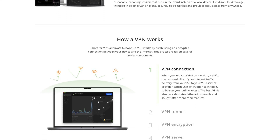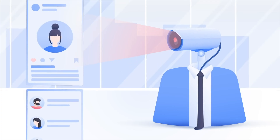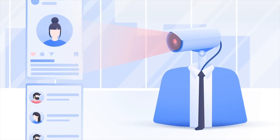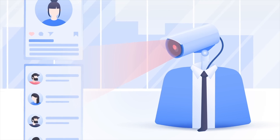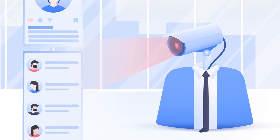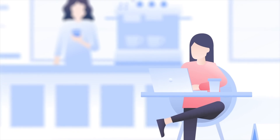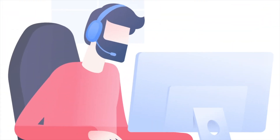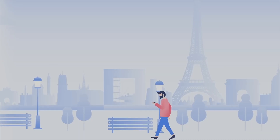IPVanish protects your online activity by hiding your internet traffic from prying eyes. It routes your connection through a secure server, which scrambles your data so that hackers, your internet provider, or even websites cannot see what you're doing. It also changes your IP address, which helps hide your real location — meaning you can browse privately, avoid targeted ads, and even access content that might be blocked in your region.